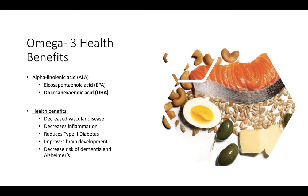Looking at omega-3 health — ALA is your essential fatty acid, meaning our body cannot make it, and then our body can make EPA and DHA from it. DHA is where the majority of research is focused, and EPA and DHA can be measured objectively in the bloodstream rather than relying on self-reporting. The documented health benefits of consuming omega-3s include decreased vascular disease, reduced inflammation, decreased type 2 diabetes, improved brain development, and decreased dementia and Alzheimer's. DHA is actually fortified in baby formulas to support good brain development. It is important to have two servings of fatty fish per week or take a supplement.